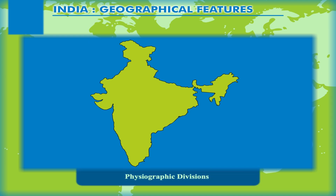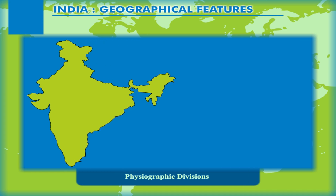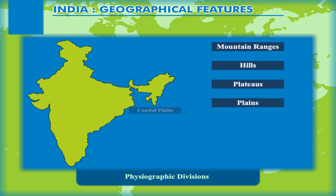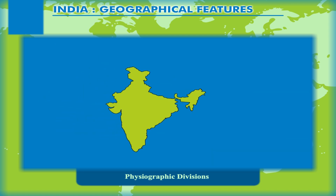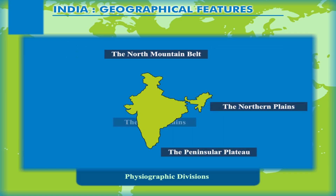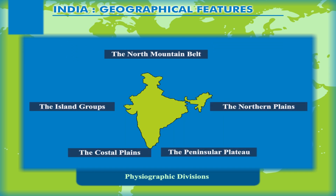Physiographic Divisions: India is also known as a subcontinent because of its diverse physical features. It is a complete geographical unit with high mountain ranges, hills, plateaus, plains, coastal plains, beaches and islands. The various landforms enable us to divide India into five distinct physiographic divisions, each with its own striking characteristics.